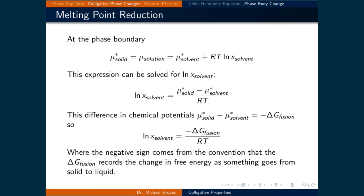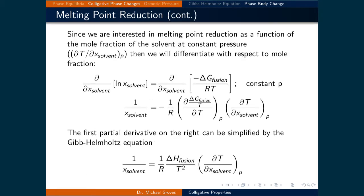The difference in chemical potentials is simply the negative of the Gibbs free energy of fusion. The minus sign is due to the fact that the positive direction for this process is solid to liquid, whereas the difference written here is a process going from liquid to solid. So the natural logarithm of the mole fraction of the solvent equals the negative of the Gibbs free energy of fusion over RT. Since we are interested in melting point reduction as a function of the mole fraction of the solvent at constant pressure, we will differentiate with respect to mole fraction.